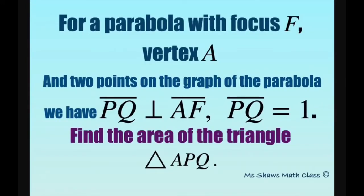Hi everyone! For a parabola with focus F, vertex A, and two points on the graph of the parabola, we have PQ perpendicular to AF, and the length of PQ is 1. We're going to find the area of the triangle APQ.